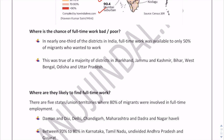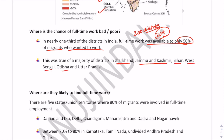On the other end, one-third of the districts in India — approximately 204 districts — had full-time work available to only 50% of migrants who wanted to work. The districts performing poorly are majorly in Jharkhand, Jammu & Kashmir, Bihar, West Bengal, Odisha, and Uttar Pradesh.